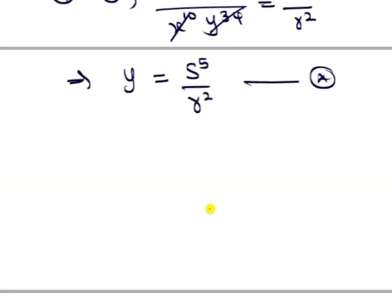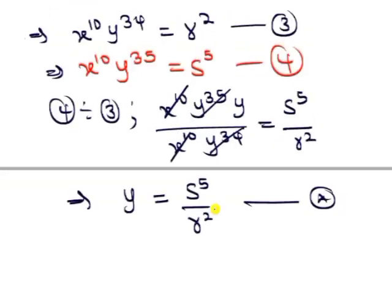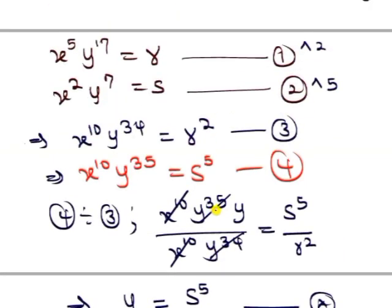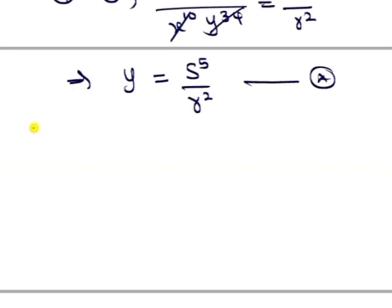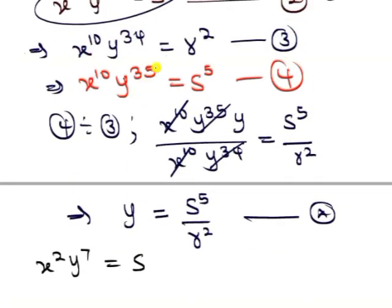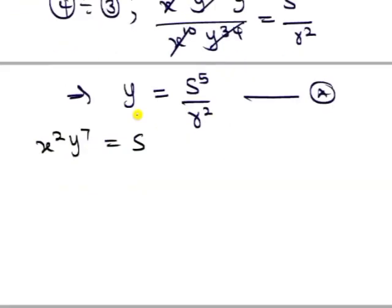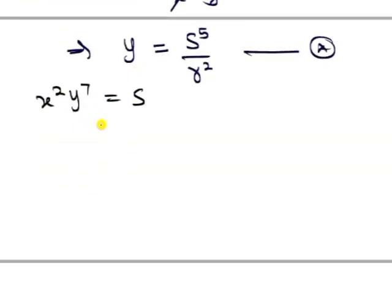So all we need to do now is to get our x. And to be able to get our x, we can substitute y into equation 2. So if we substitute into equation 2, remember that equation 2 is x^2 * y^7 = s. So now we are substituting y.